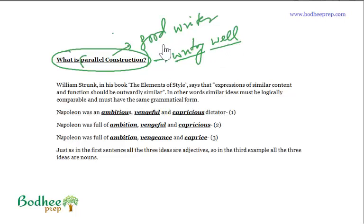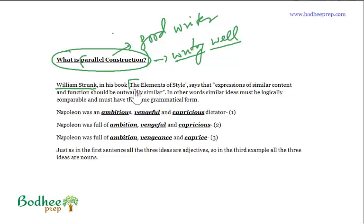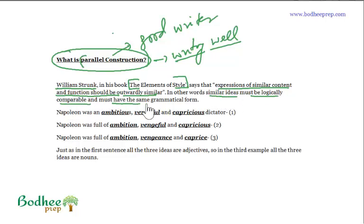There are not many concepts in parallel construction the way we have in subject-verb agreement, pronouns, tenses, punctuation, and similar technical topics. William Strunk, one of the great editors, wrote the book 'The Elements of Style.' In that book he says: expressions of similar content and function should be outwardly similar. In other words, similar ideas must be logically comparable and must have the same grammatical form.